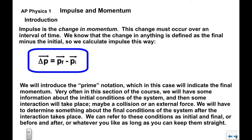Now we're going to introduce a different notation. We're going to call it the prime notation, which in this case will indicate the final momentum. Very often in this section of the course we're going to have some information about the initial conditions of the object or the system. And then some interaction is going to take place. Maybe an external force is applied. Maybe there's a collision with another object.